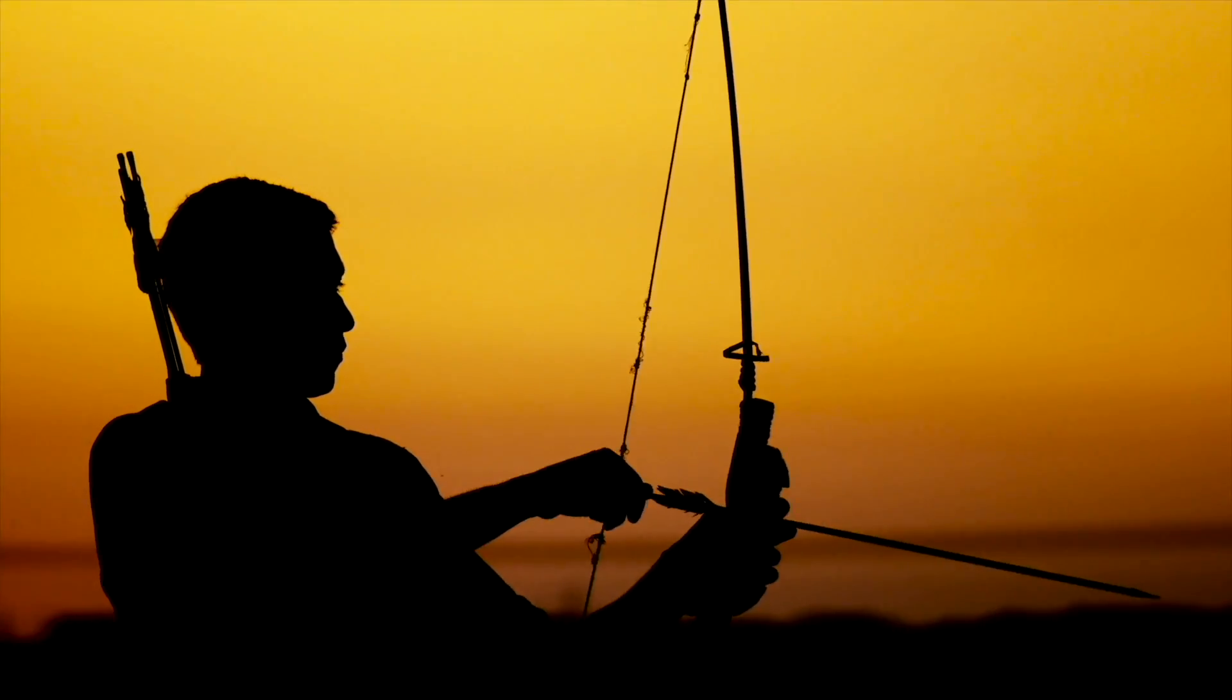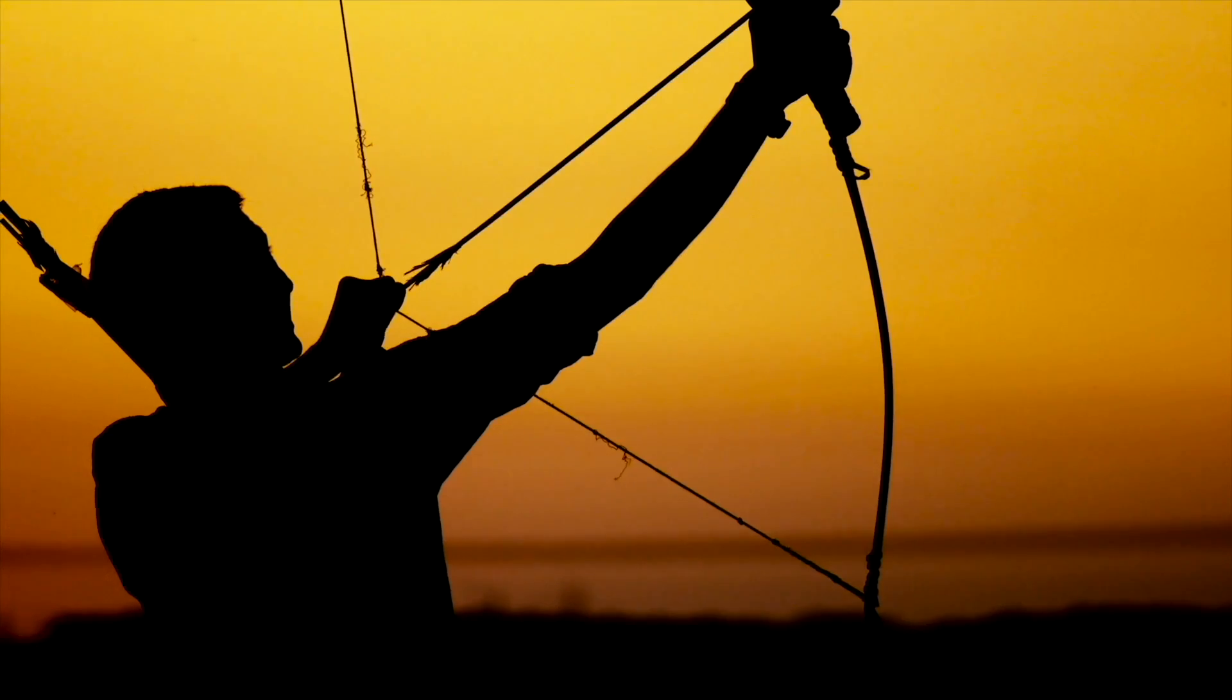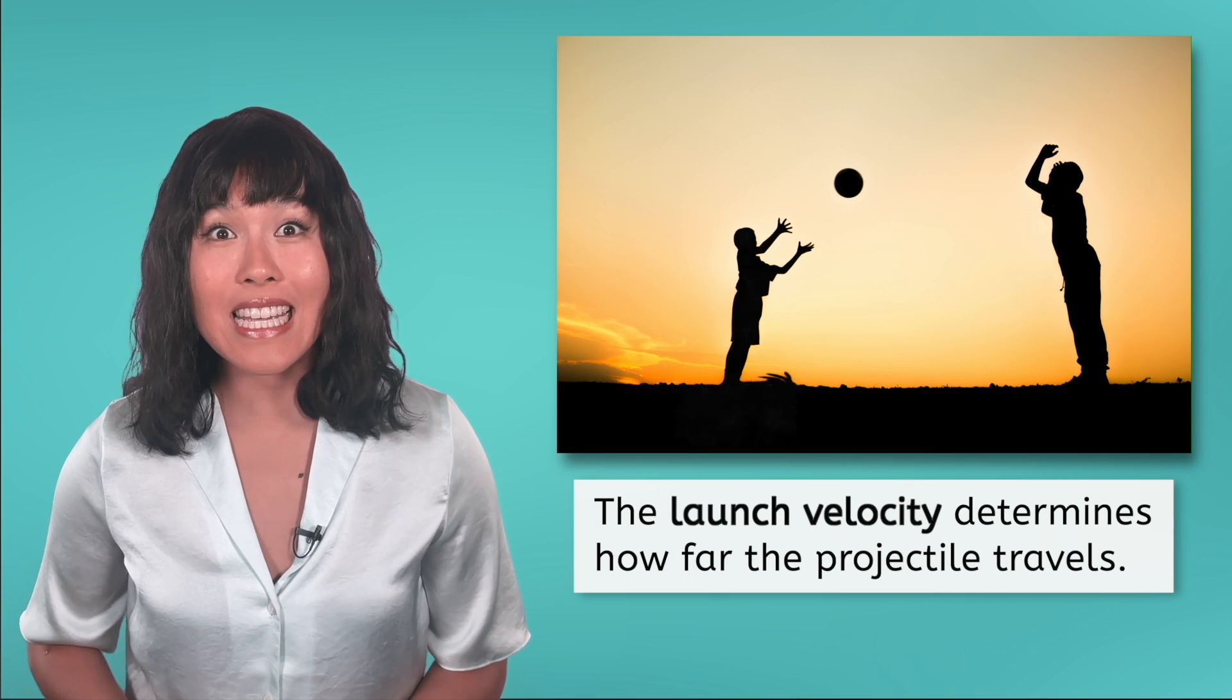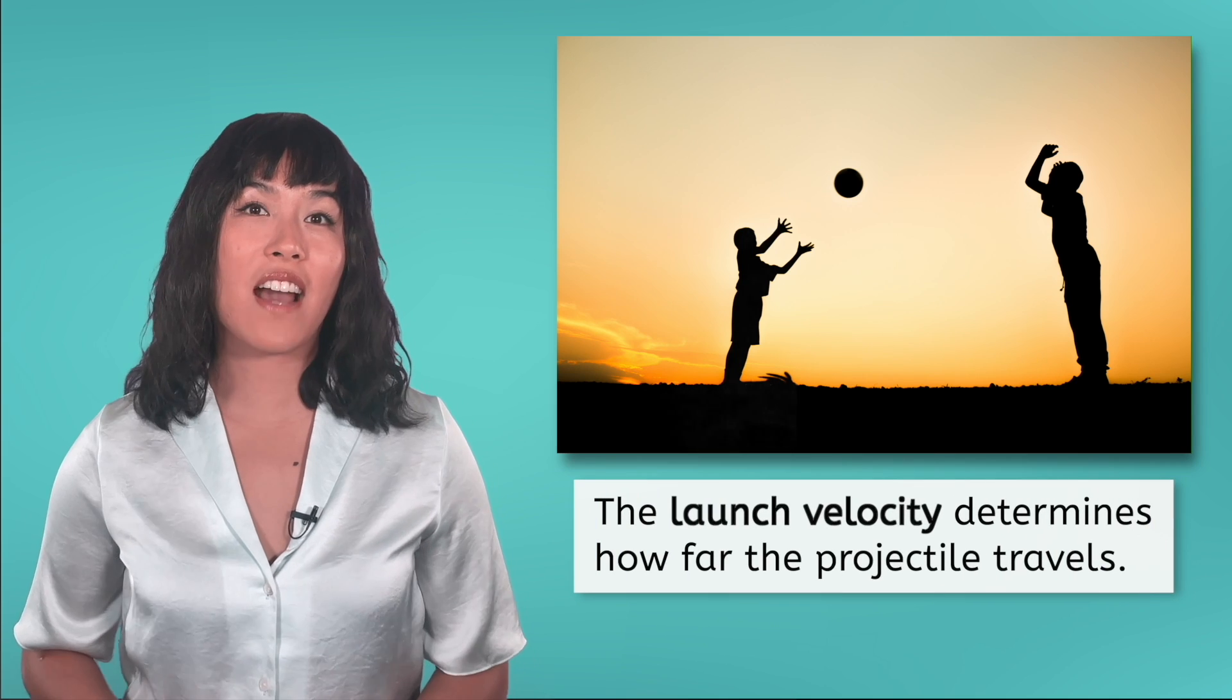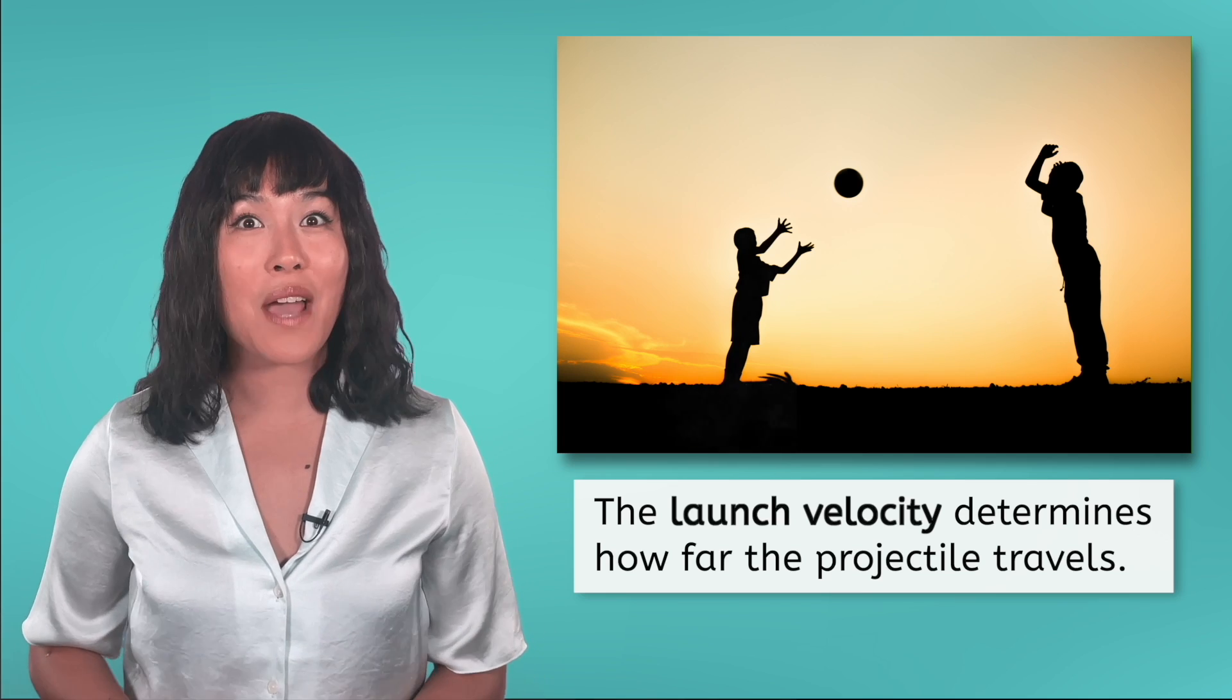This is why you actually have to aim a bit higher than where you want your projectile to end up. What do you think determines how far a horizontal projectile travels before hitting the ground? We can't change gravity, so it's going to have a set amount of time before reaching the ground. How far it gets in that time is determined by the velocity it was thrown or launched at. By throwing it harder, it can cover more distance in the time it has in the air.